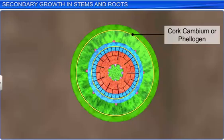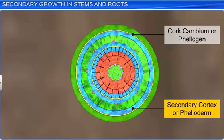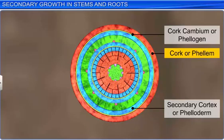In the phelogen, differentiation of cells begins on both sides. As a result, the cells of the inner surface differentiate into the secondary cortex, or pheloderm, while the cells of the outer surface differentiate into cork or phelum. Tissue resulting from secondary growth in the cortex — namely cork, phelogen, and pheloderm — are collectively called periderm.